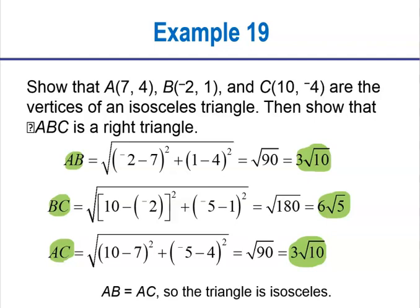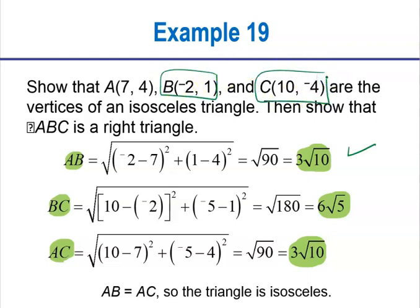Here's what's happening. If you look at AB — they took negative 2 minus 7 squared, then 1 minus 4 squared, and got √90. That matches exactly what we got. Now look at BC: for x₂ minus x₁, they have 10 minus negative 2 = 12, squared — that's what we got. But for y₂ minus y₁, my y₂ is negative 4. They typed in negative 5 here and negative 5 here. That's the error — a substitution error that makes the answer incorrect.